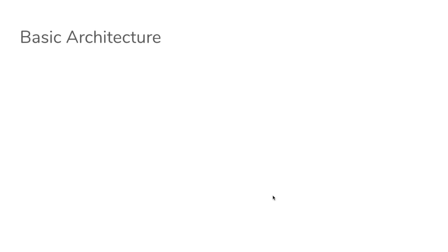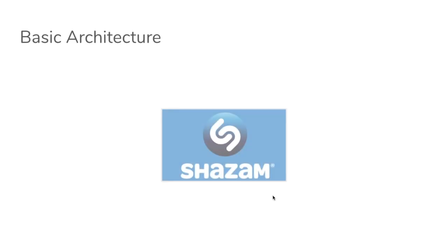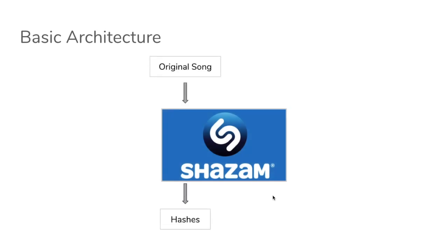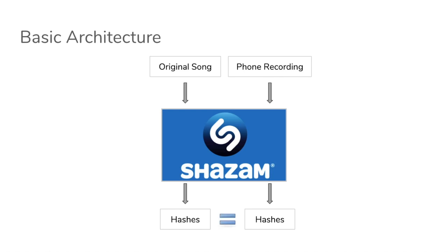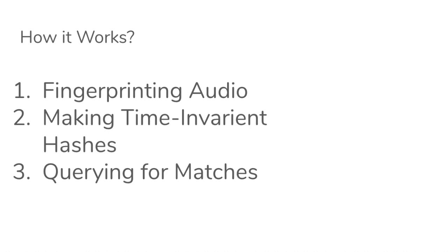Let's see how the basic architecture of Shazam looks. Their database stores the original songs and the hashes of those songs. When a new recording comes in, they hash it and compare the two hashes — if they match, they show the result.